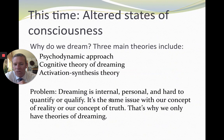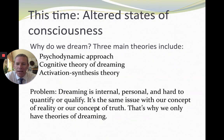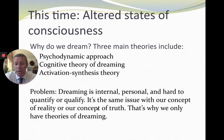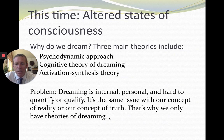Dreaming is internal, personal, and hard to quantify or qualify — the same issue we have with reality and our concept of truth. Psychologists try to measure things objectively, just like a scientist would. But because a dream is happening to us in an altered state, how do we know exactly what's being reported back, and can we trust the reporting? It's a sticky situation trying to observe and measure dreams objectively, so we get theories — not truth, not an algorithm to figure this out.